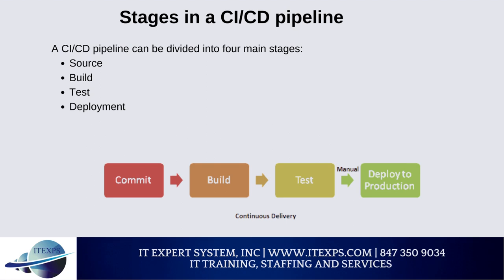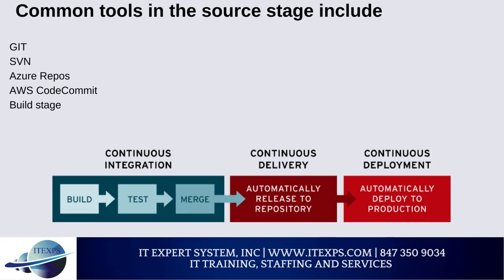The Source stage is the first stage of any CI/CD pipeline. The pipeline will get triggered by any change in the program or a pre-configured flag in the code repository. This stage focuses on source control, covering version control and tracking changes. If the automated workflow detects a change in the central repository — a commit or new version — it will trigger tasks such as code compilation and unit testing. Common tools include Git, SVN, Azure Repos, and AWS CodeCommit.